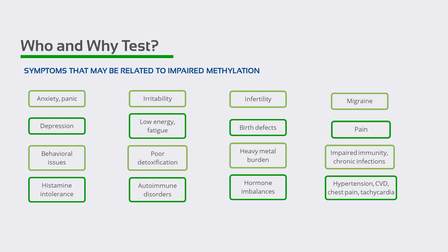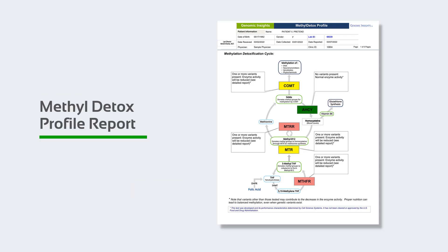The methyl detox profile is best used within the context of a comprehensive assessment along with evaluation of gut health, symptoms reported by the patient, micronutrient status, food sensitivities, and nutrition and lifestyle choices. Understanding methylation genetics and where the SNPs, or single nucleotide polymorphisms or variants, exist provides insight needed for the health problems or symptoms that are occurring. There are other genes involved in this pathway that are not included in the Cell Science System's methyl detox profile, so it is important to keep that in mind.